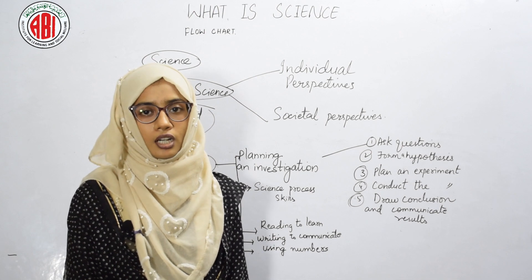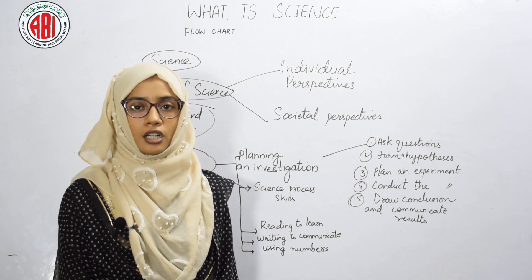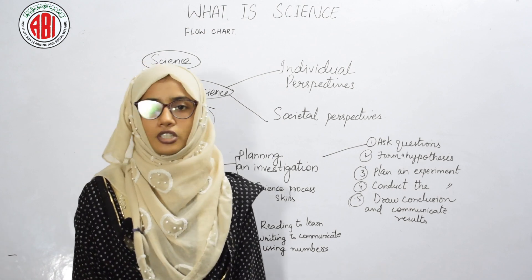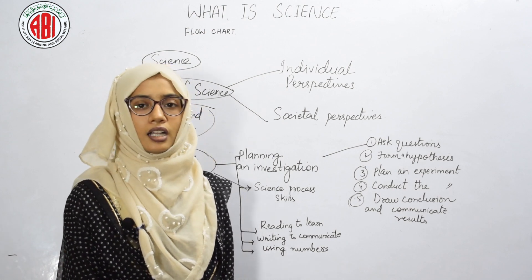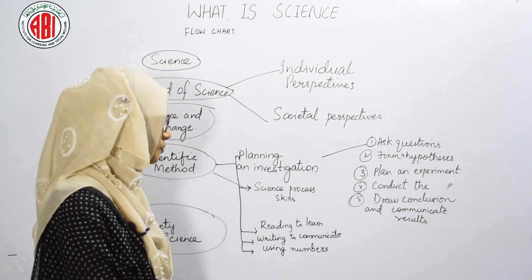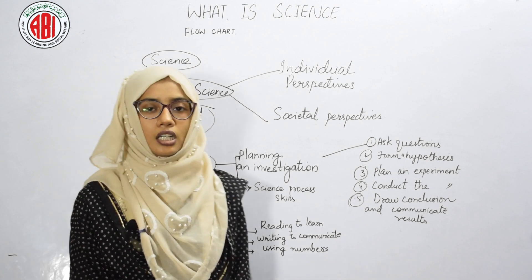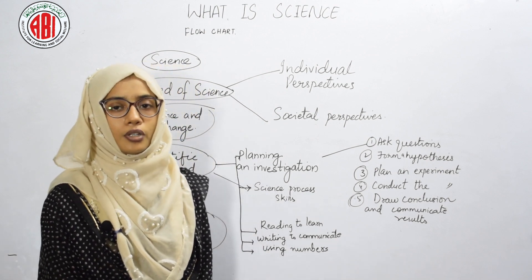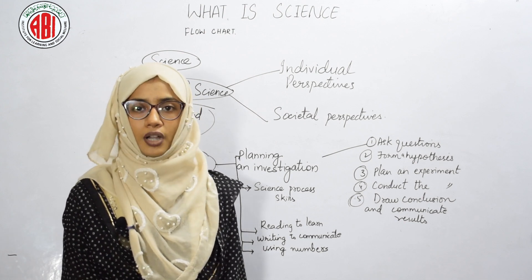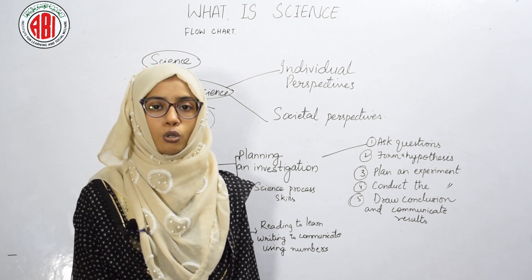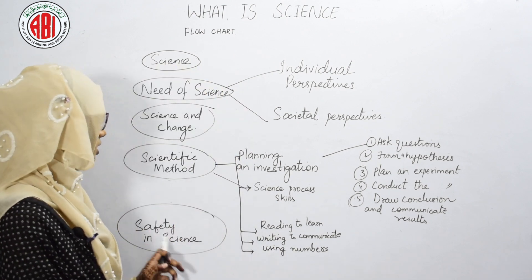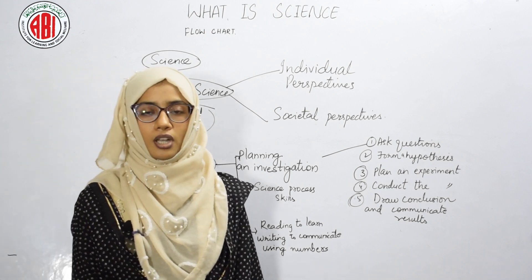Writing to communicate: scientists write data and interpret it for other people, communicating using four types of writing — narrative, persuasive, informative, and expressive. Using numbers: scientists use numbers in their work to interpret data, using tables, charts, graphs, and pie charts to interpret data and show the results of their investigation.